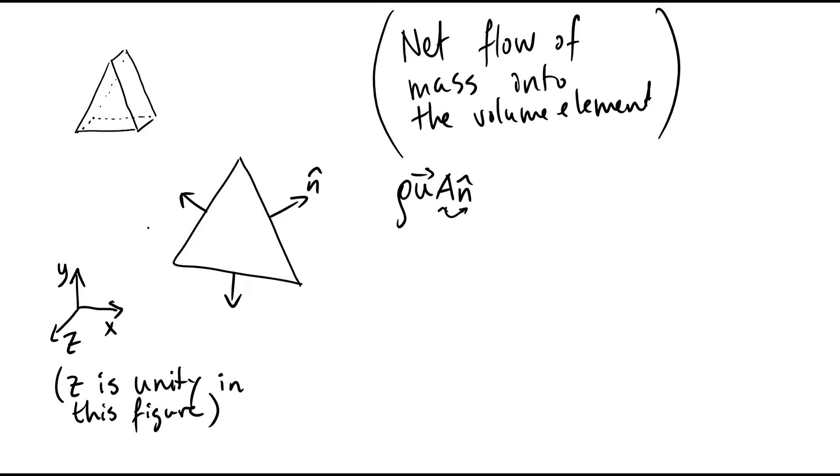for instance, if we have flow coming in here on the left side, we see that the velocity vector in the x-direction is positive and the normal component in the x-direction is negative. So this expression would actually be negative.